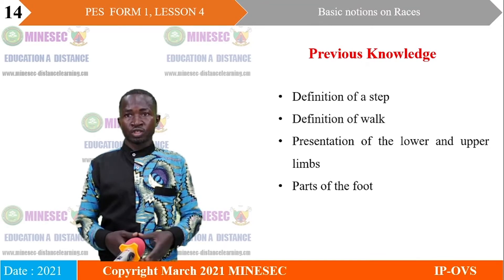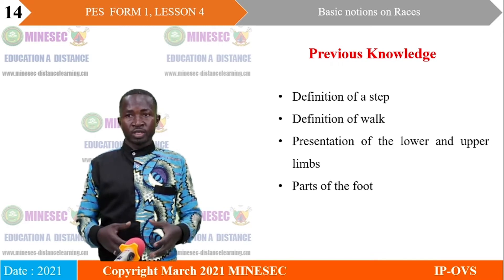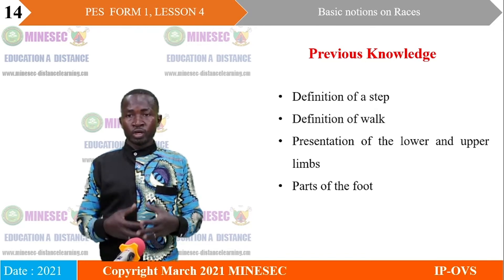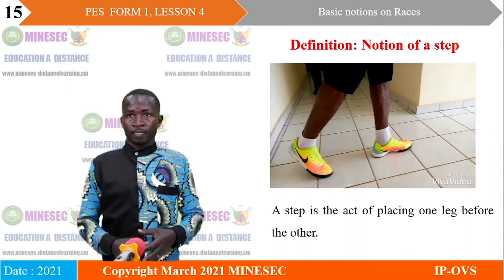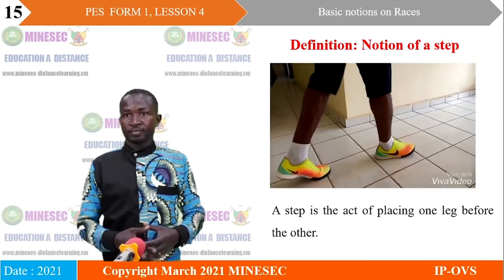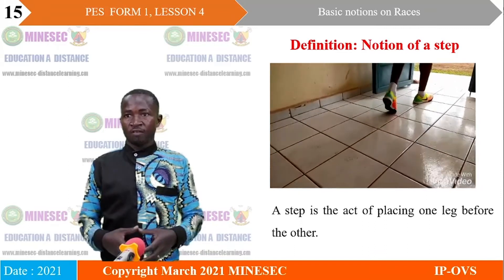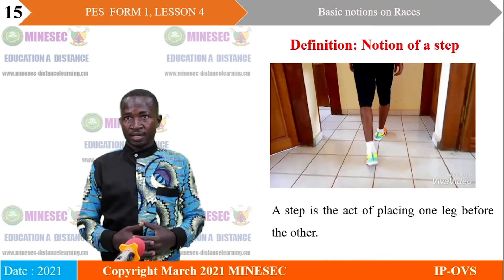For our previous knowledge, we are going to define a step, look at the definition of work, do a presentation of the lower and upper limbs of the body — the parts involved in races — and look at parts of the foot. A step is an act of placing one leg before another, as illustrated in the video showing successive steps. During walking, you must walk on two legs.